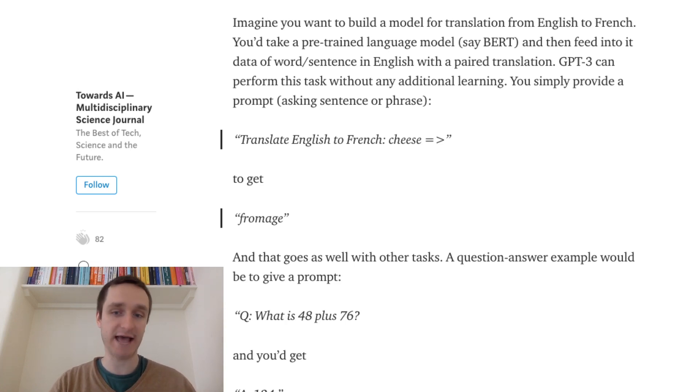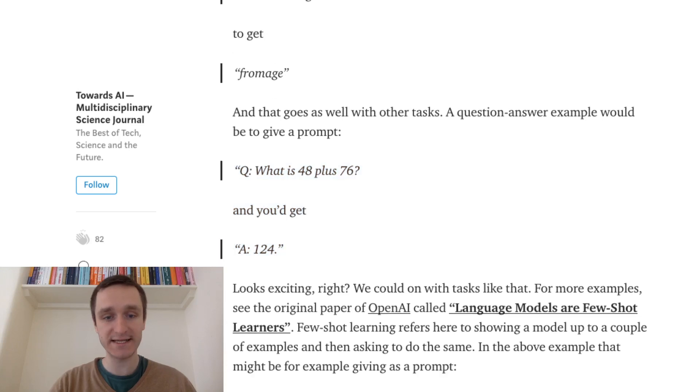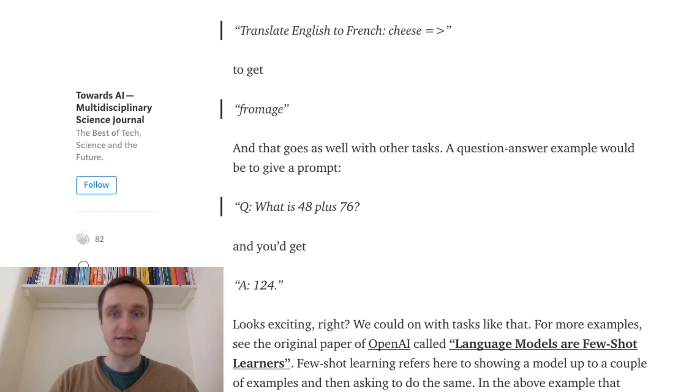And the next task is actually answering questions from general knowledge. So for example, what is 48 plus 76? And you get as the answer 124. So this is basically another thing which is really exciting. And all this is called basically zero-shot learning because you give zero examples of what's going on.